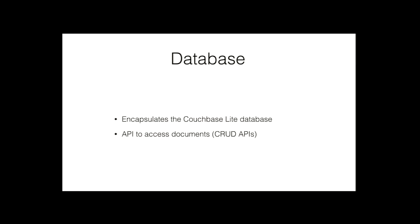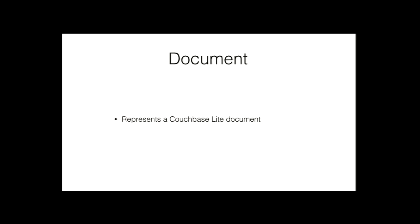You don't have to use anything else — you can just use Couchbase Lite, and it works when using it with Xamarin. The same code can work across platforms. They work with things called documents — document-based data access using JSON underneath. The Document class represents a Couchbase Lite document in the .NET API. That's where you're saving your data.